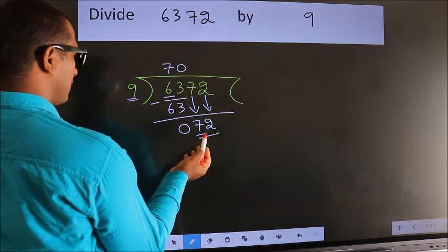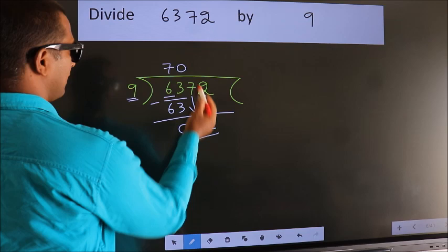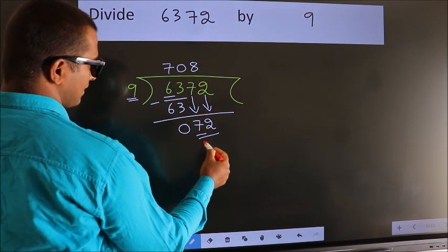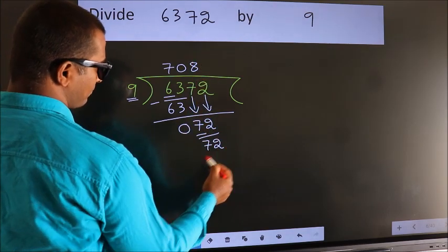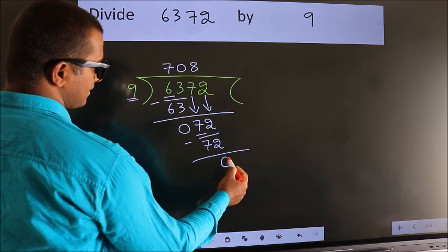When do we get 72? In 9 table. 9 times 8 is 72. Now, we subtract. We get 0.